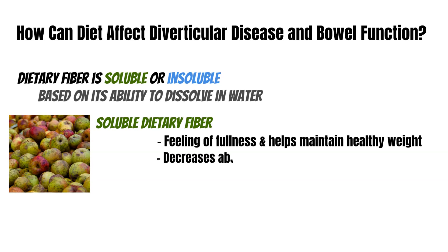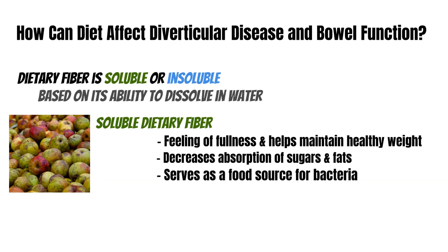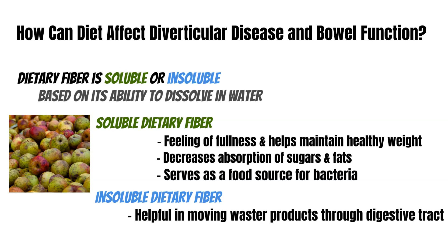Soluble dietary fiber decreases the absorption of sugars and fats, and it also serves as a food source for all those bacteria in your large intestine. Insoluble dietary fiber is helpful in moving waste products throughout the digestive tract — it picks up all that stuff and provides bulk to the stool. These are the two components: soluble and insoluble. The recommendation of 25 to 30 grams is a combined amount, and when increasing fiber intake, it's important to drink enough fluid.